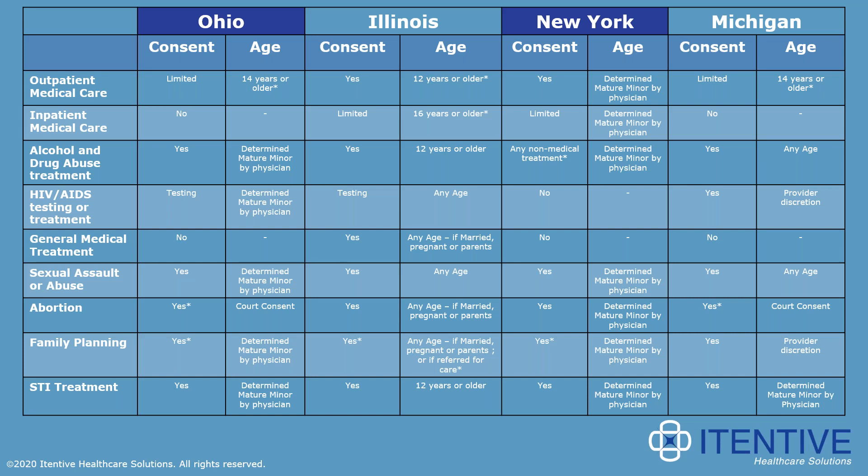As much as we wish we could give you a blanket recommendation for how to approach minor confidentiality, laws truly vary state by state. To prove this, we included a slide showing examples of how much states can vary for allowing minors to consent to different types of treatment. In New York and Ohio, it's a common requirement for a minor to be deemed mature by a physician in order to accept treatment — meaning the physician considers the minor to be emotionally and intellectually mature enough to give informed consent without parental consent.